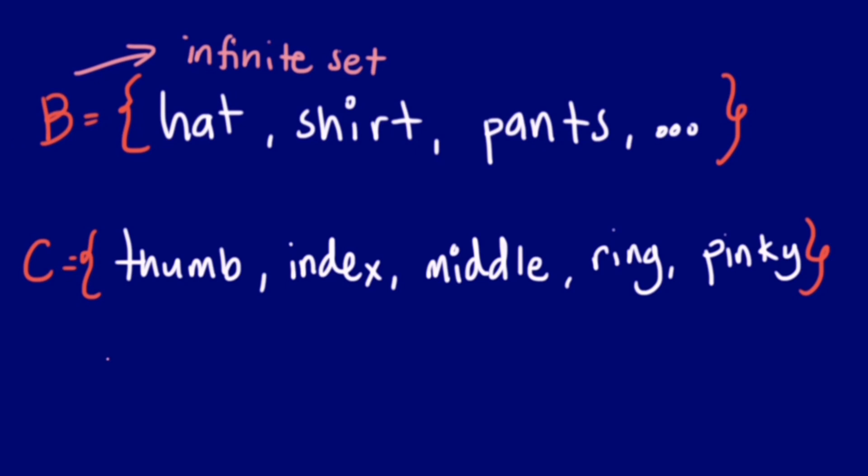Now take a look at our second set. We have enlisted all the types of fingers, therefore we have a finite number of elements. We call this one a finite set.